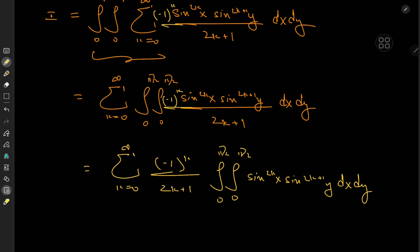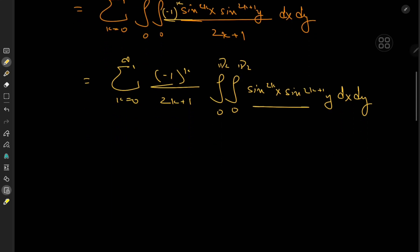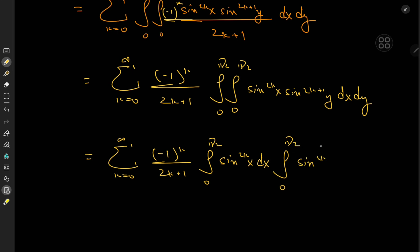There is something to notice here: we have one integral completely with respect to x and one completely with respect to y, because the integrand is just a product of two functions, one purely a function of x and the other purely a function of y. So, I can write this as the sum over k from 0 to infinity of negative 1 to the k over 2k plus 1 times the integral from 0 to pi over 2 of sine to the 2k of x dx, times the integral from 0 to pi over 2 of sine to the 2k plus 1 of y dy.